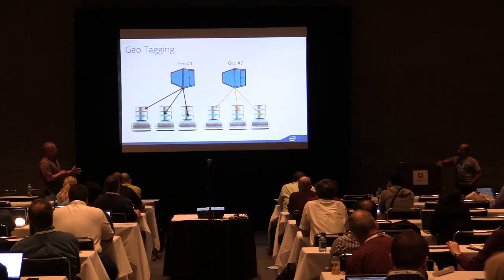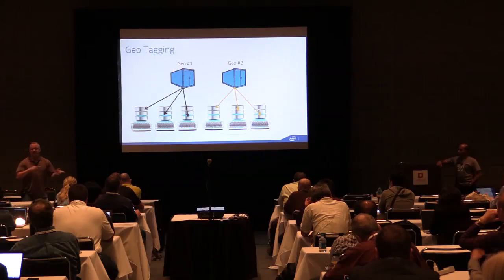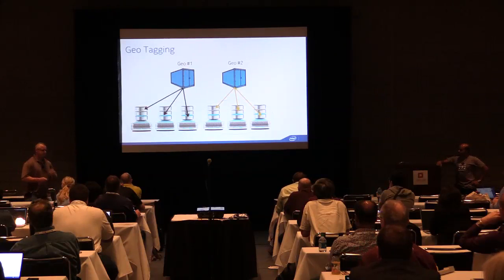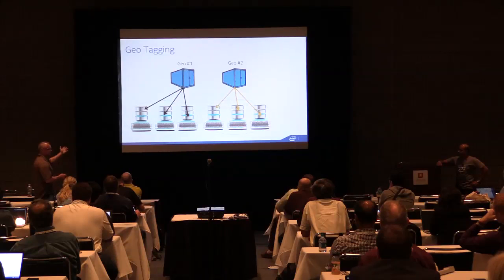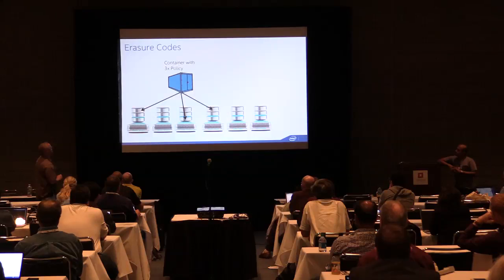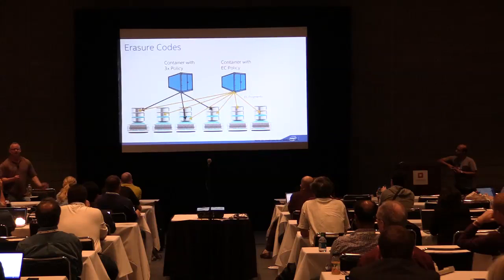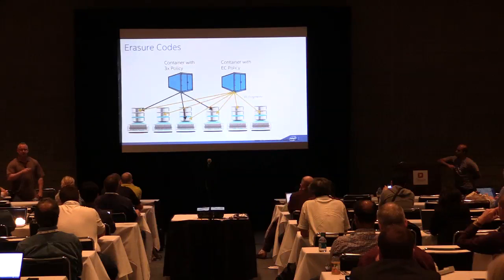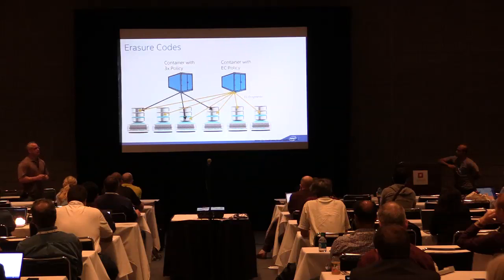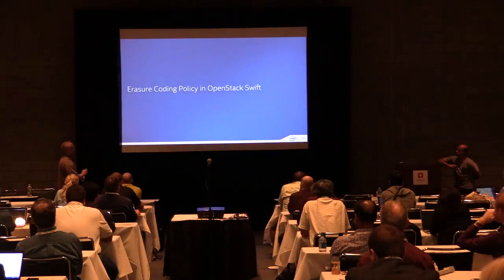Geo-tagging is still a work in progress because we haven't addressed isolation of container and account metadata yet — that's a blueprint we'll be drafting once the rest of policies is merged to master. And finally, erasure codes: we create a new container and point the ring to a different number of drives in the cluster. Those now represent fragments of your object as opposed to the object itself. We're no longer using the ring to track copies; we're using it to track fragments. With that, I'll turn it over to Tushar.